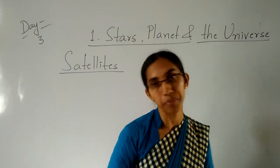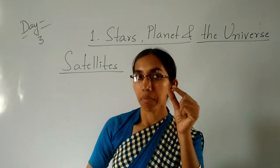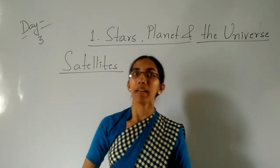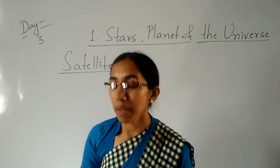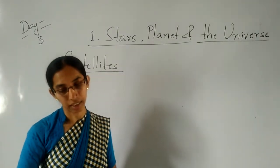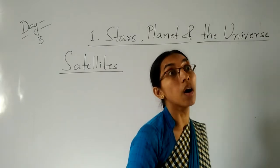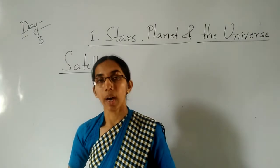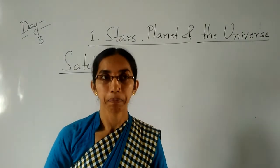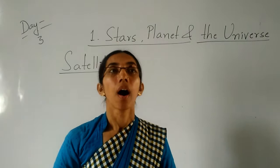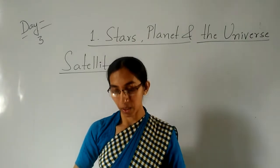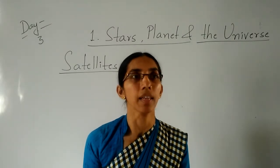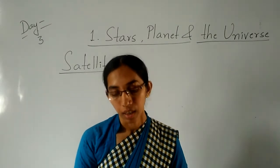Pluto is a dwarf planet because it is very small. Which planet is called the red planet? Mars is called the red planet. Why is it red in colour? Because of the presence of iron mineral, this planet looks red in colour.